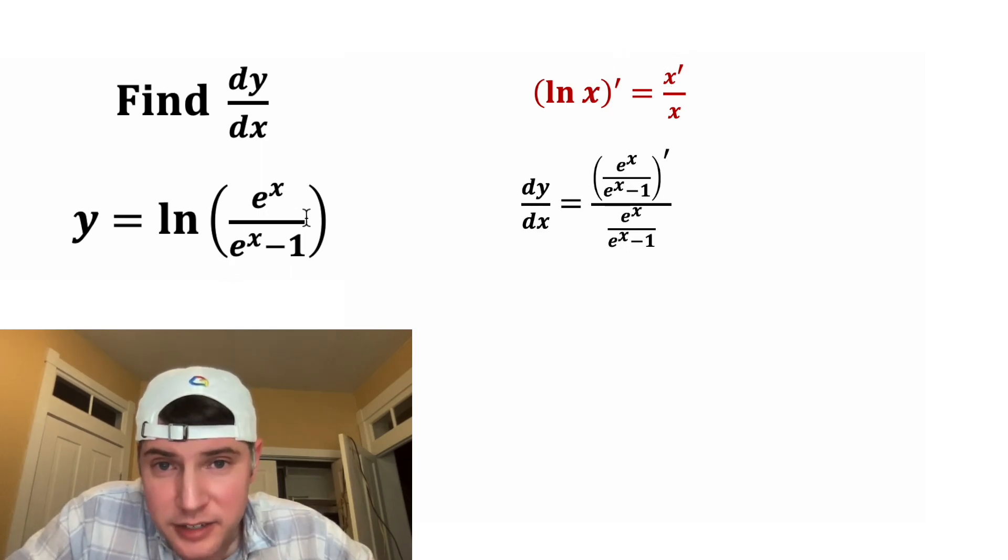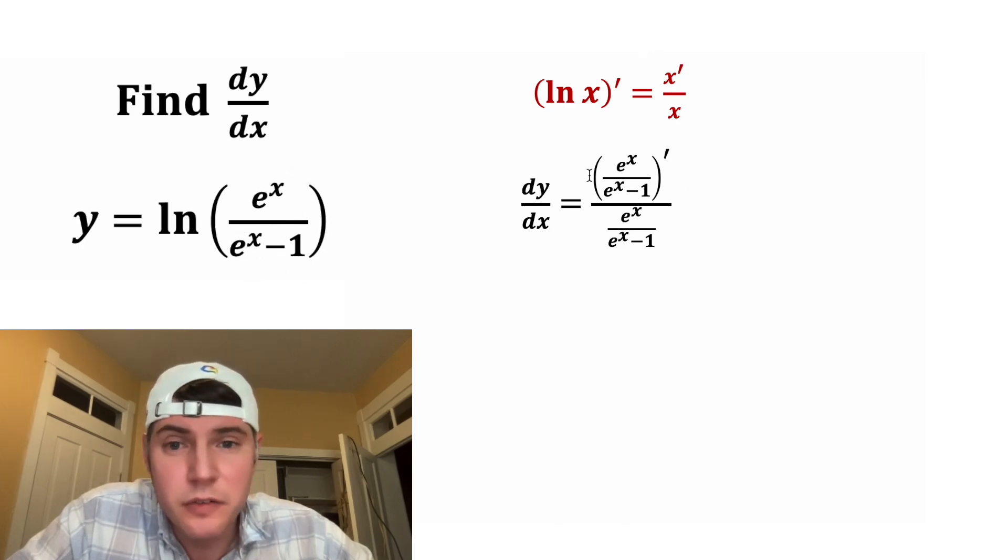So in this case, our x is this whole e to the x over e to the x minus 1. So we're going to have the derivative of e to the x over e to the x minus 1 over e to the x over e to the x minus 1.